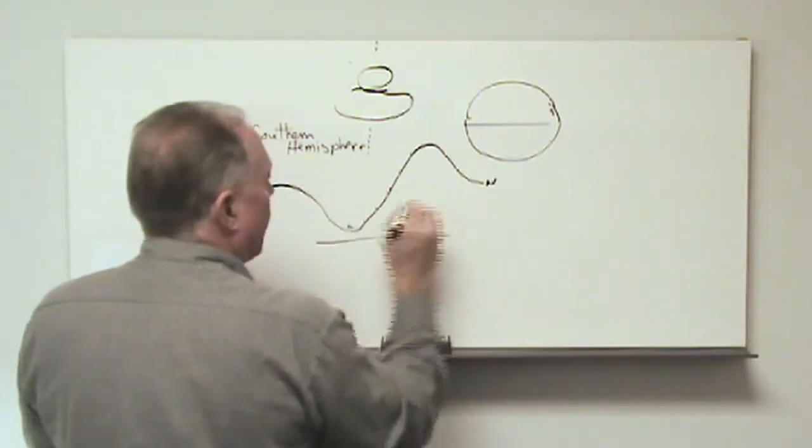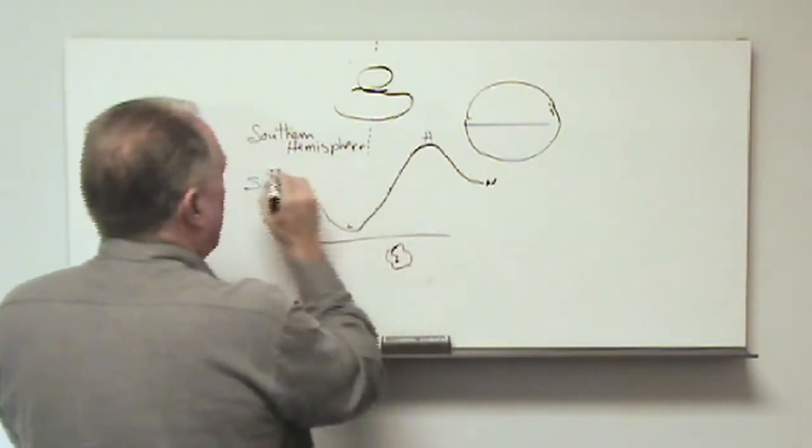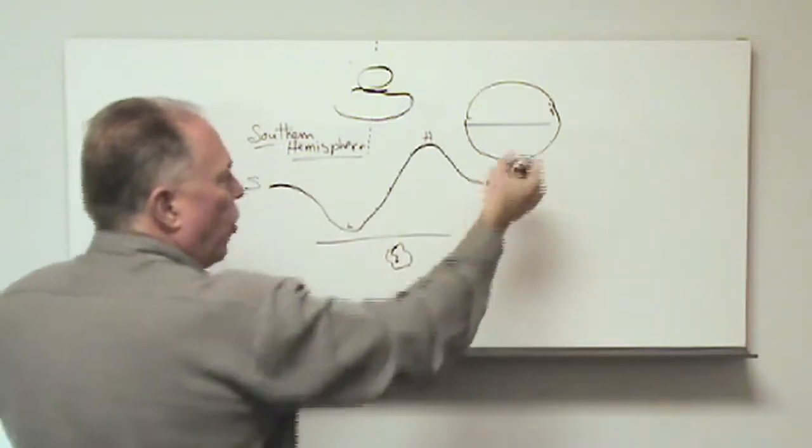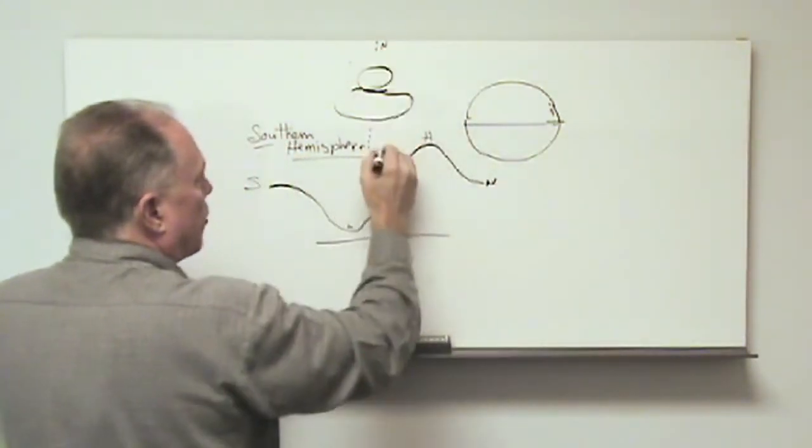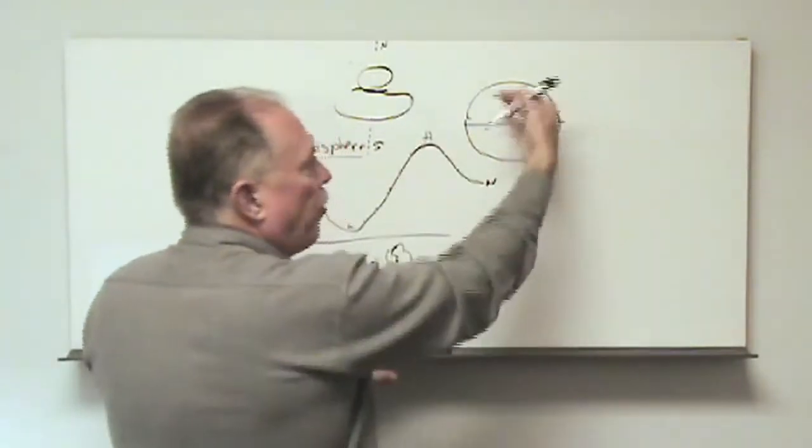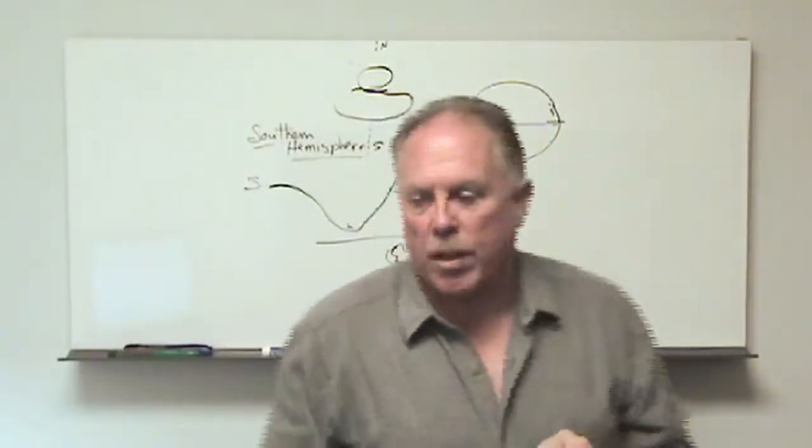So we would see a low to the south and a high to the north, and this would be in the southern hemisphere. So all of the discussions that we had regarding the shape of the anomalies, this is north, this is south, are flipped for the southern hemisphere. I just wanted to make that point.